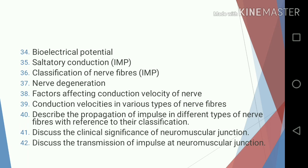Thirty-five, saltatory conduction; thirty-six, classification of nerve fiber; thirty-seven, nerve degeneration; thirty-eight, factors affecting conduction velocity of nerve; thirty-nine, conduction velocities in various types of nerve fibers; forty, describe the propagation of impulse in different types of nerve fibers with reference to the classification; forty-one, discuss the clinical significance of neuromuscular junction; forty-two, discuss the transmission of impulse at neuromuscular junction.